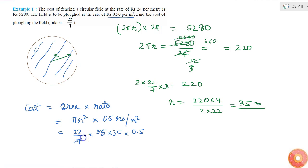7 and 5 are 35, so I can cancel it and write it as 5, right? And 22 into 0.5 is 11. So I will write it as 11 into 5 into 35, which is equal to 11 into 175, which will be 1925 rupees.